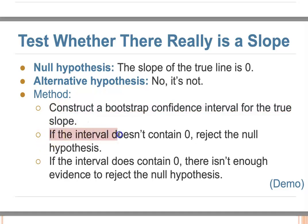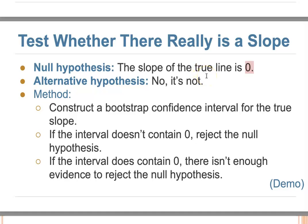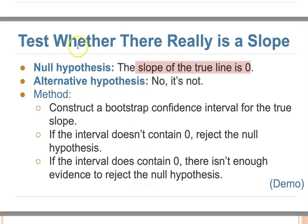We can accept or reject the null hypothesis using the bootstrap confidence interval for the true slope. If the interval contains zero, we don't reject the null hypothesis. If it doesn't contain zero, we reject it. This approach works not only for testing if the true slope is zero, but for any hypothesized slope value — we construct the bootstrap confidence interval and check if it contains the null hypothesis slope.